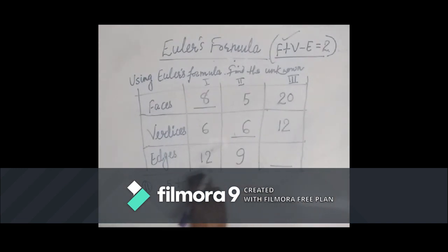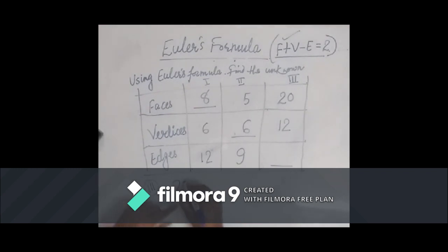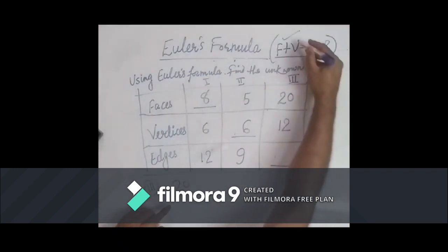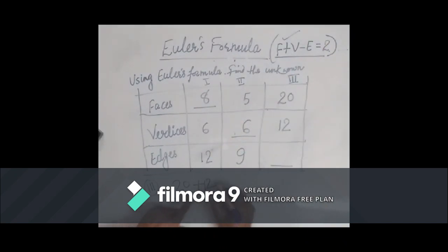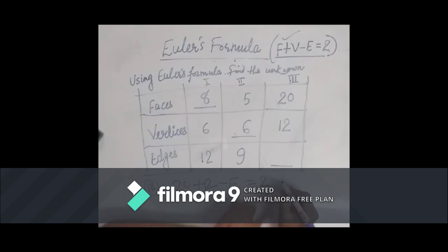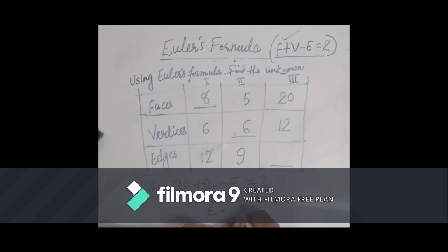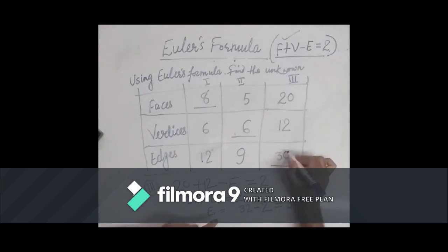In the third part, the number of faces is 20, number of vertices is 12, and number of edges is unknown. So 20 plus 12 minus E equals 2. That is 32 minus E equals 2, so E equals 32 minus 2, which equals 30. So we enter 30 for the number of edges.